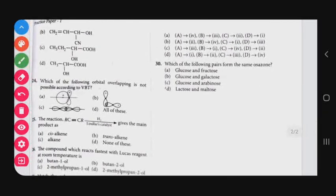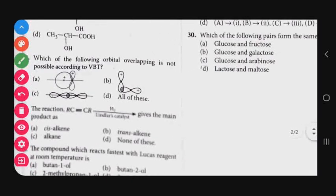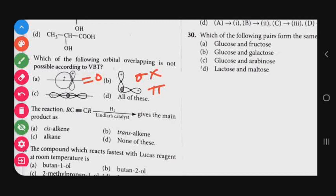Question number 24: Which orbital overlapping is not possible according to VBT (Valence Bond Theory)? Option A gives net overlapping of zero. Option B can be neither sigma nor pi bond. Option C is not allowed due to opposite sides of the wave functions. All of these are not possible, so the correct answer for question 24 is option D — all of the above.